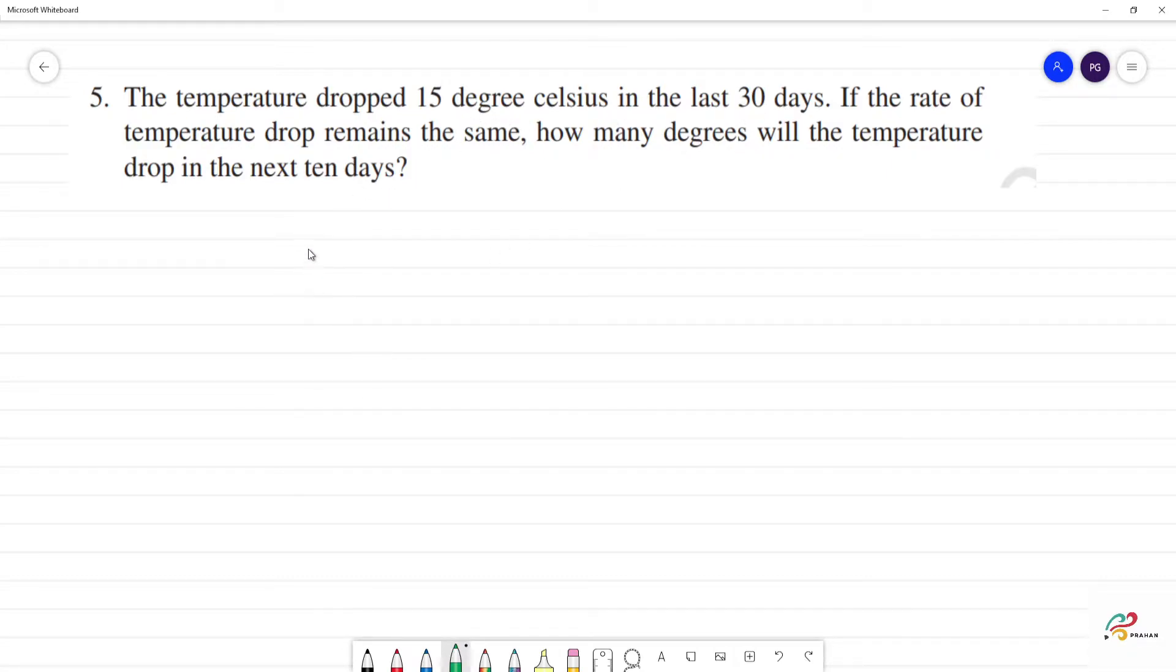Now, if we have two variables - degree is one variable, then days is one variable. If we compare the two, 15 degrees, how much is 15 degree Celsius in last 30 days?